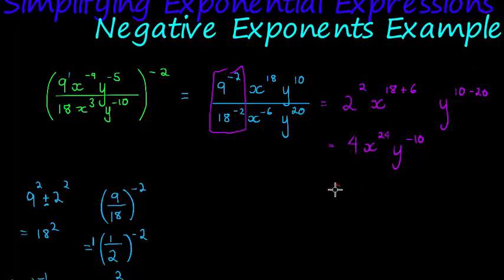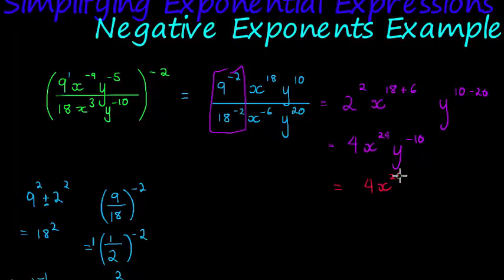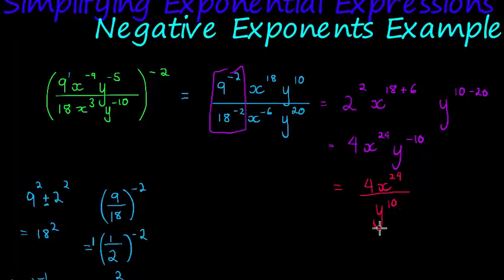So the answer is 4 times x to the power of 24 times y to the power of negative 10. Since we usually need to write answers with positive exponents, the final answer is 4 x to the power of 24 divided by y to the power of 10.